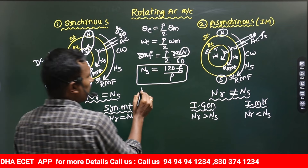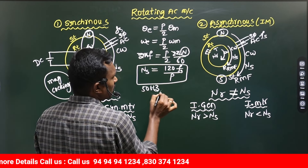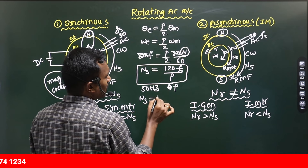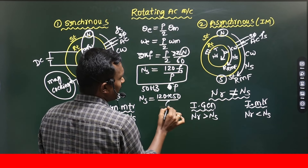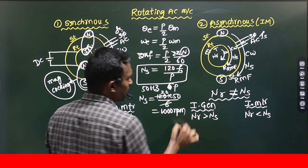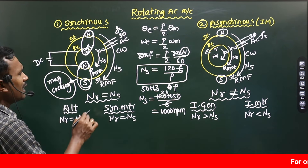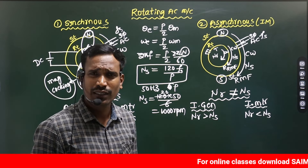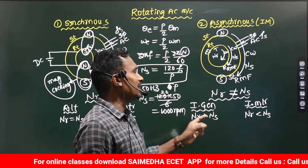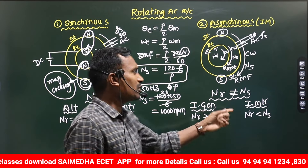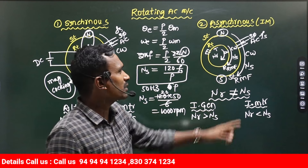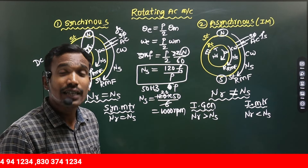For example, for a 50 Hz machine with 6 poles, the Synchronous speed Ns = 120 × 50 / 6 = 1000 RPM. If the rotor rotates at 1000 RPM, that is a Synchronous machine. If the rotor rotates at slightly more than 1000 RPM, that machine is called an Induction generator. If it rotates at slightly less than 1000 RPM — for example, 970 RPM — that is called an Induction motor.